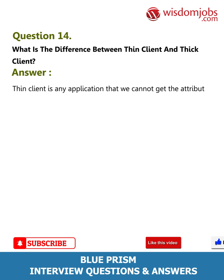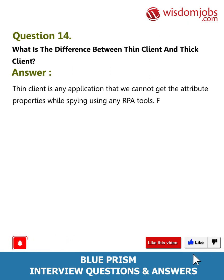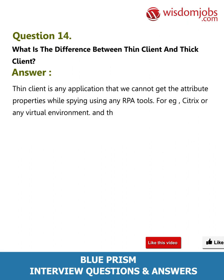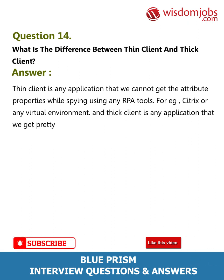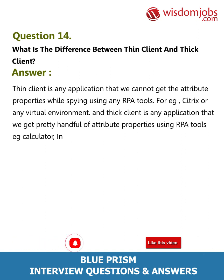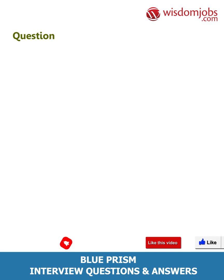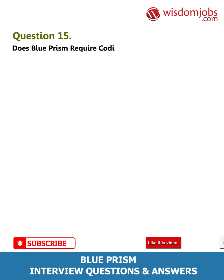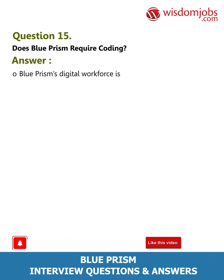Answer: A thin client is any application from which we cannot get the attribute properties while spying using any RPA tool — for example, Citrix or any virtual environment. A thick client is any application from which we get a good handful of attribute properties using RPA tools — for example, Calculator or Internet Explorer. Question 15: Does Blue Prism require coding?